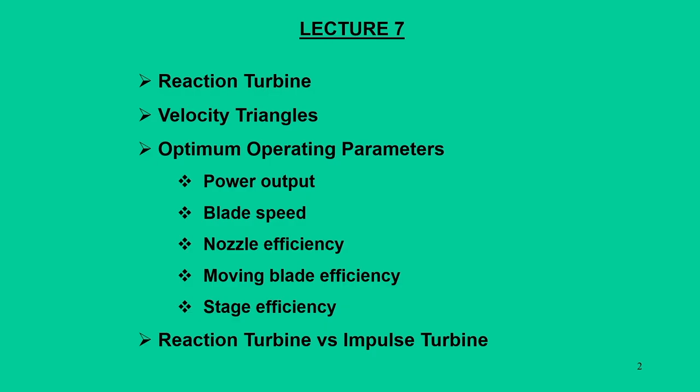Dear learners, greetings from IIT Guwahati. We are in the MOOC's course Power Plant System Engineering, Module 2, Vapour Power System, Part 2. In this lecture, our attention will be focused towards turbines and in the turbine category, we will discuss mainly on reaction turbines. Subsequently, we will talk about velocity triangles, and having drawn these velocity triangles, we will be able to find out the operating parameters for the reaction turbines.